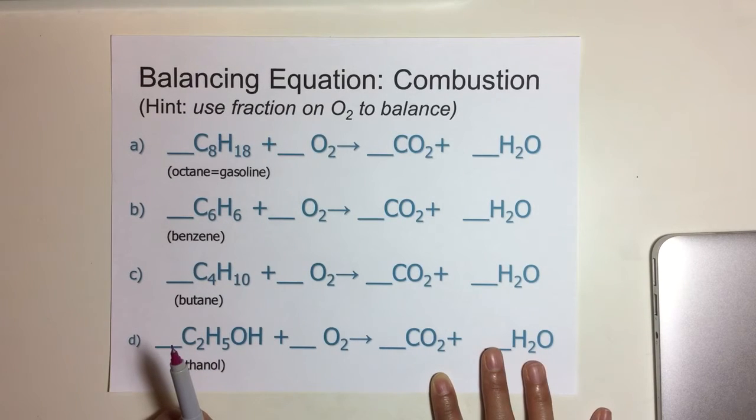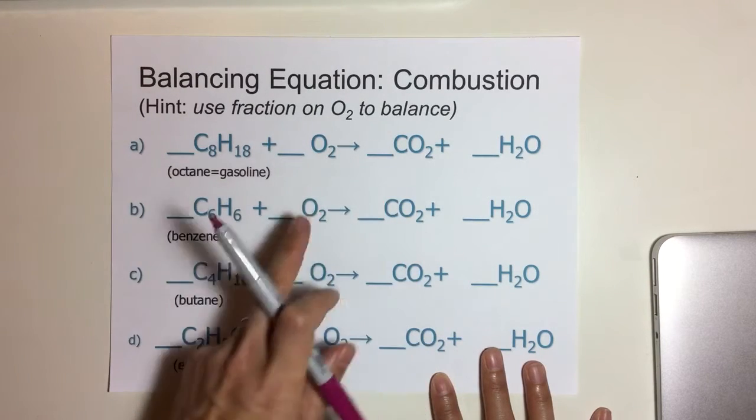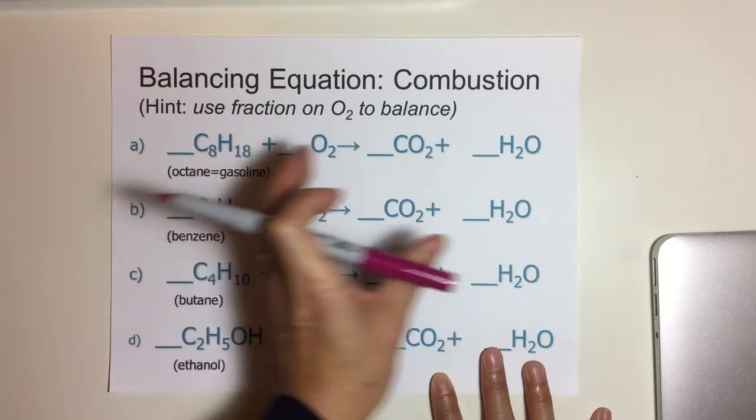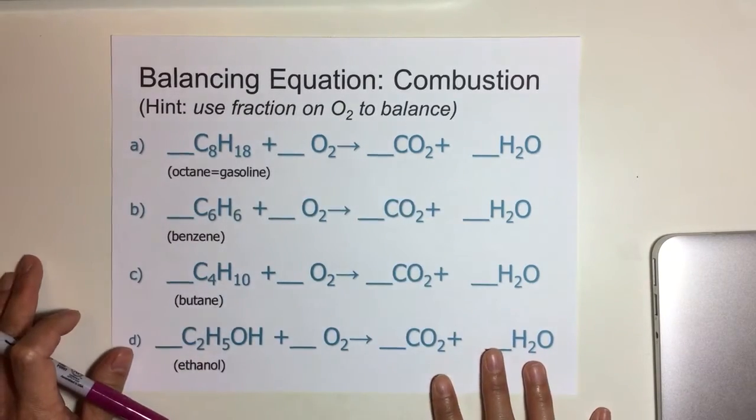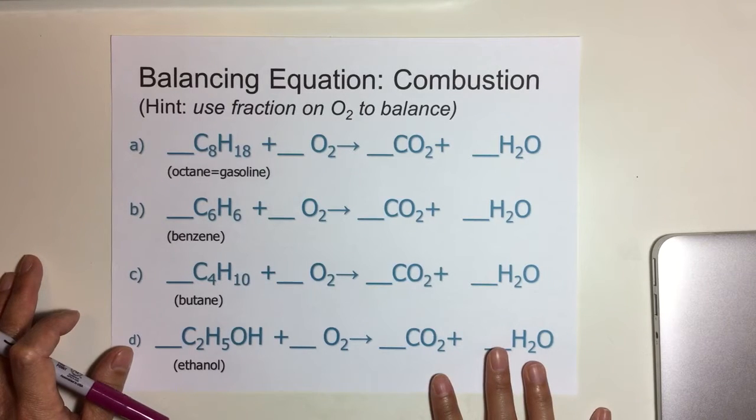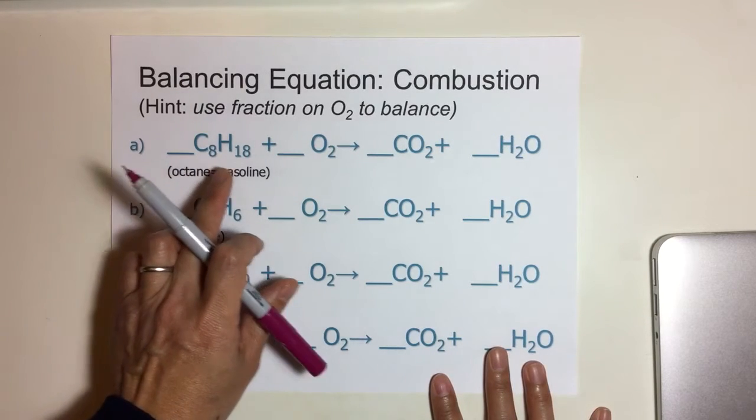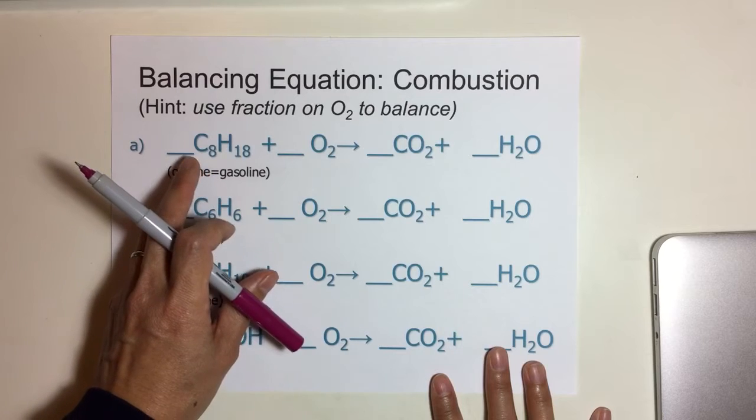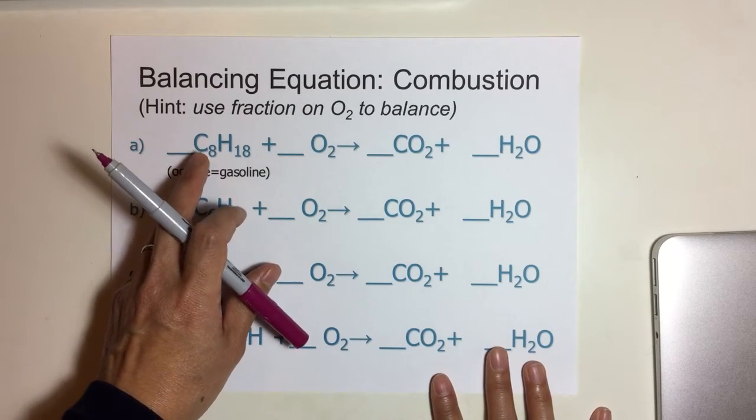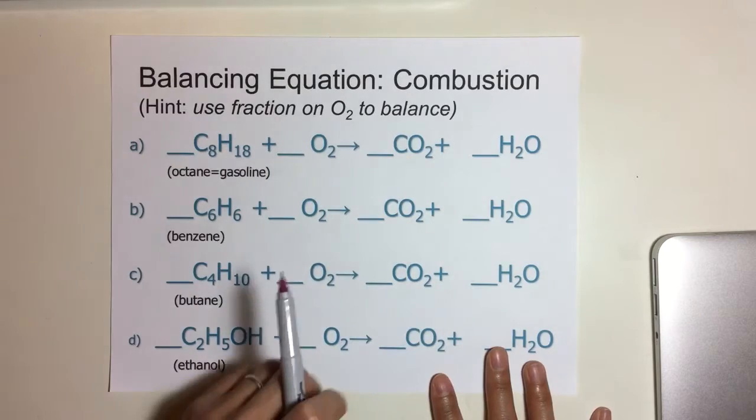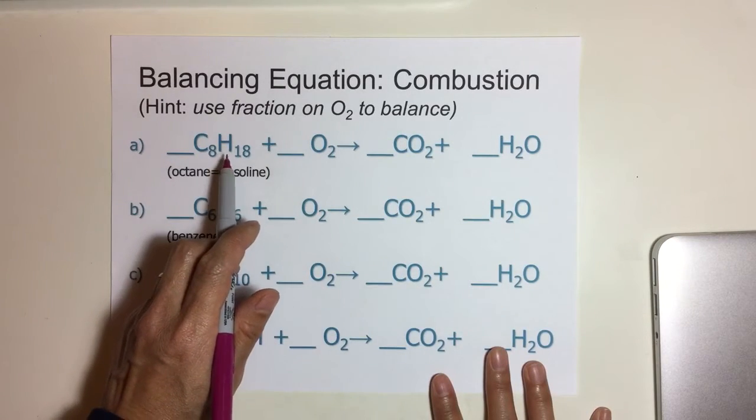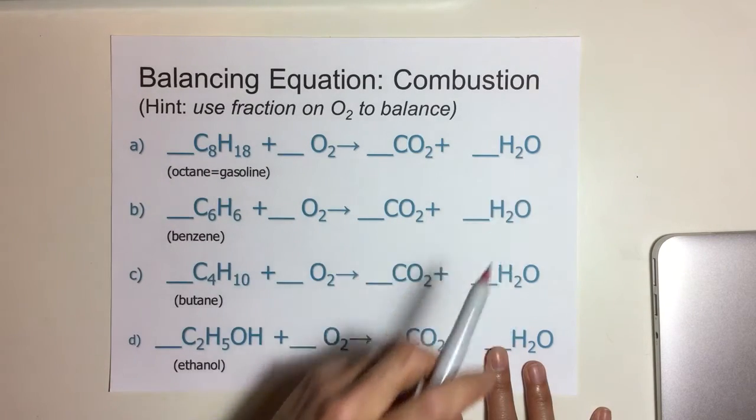We normally balance going back and forth—we're not really focusing on one side or the other. The first thing I want to do when I approach balancing is balance the elements that are least frequent. Your least frequent elements are carbon because it occurs once here and once here, and hydrogen once here and once here in two different compounds.